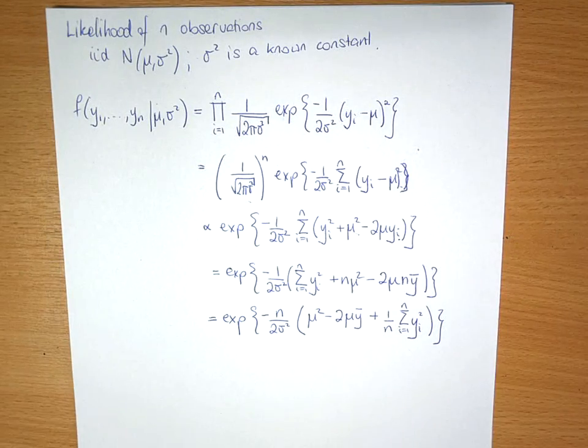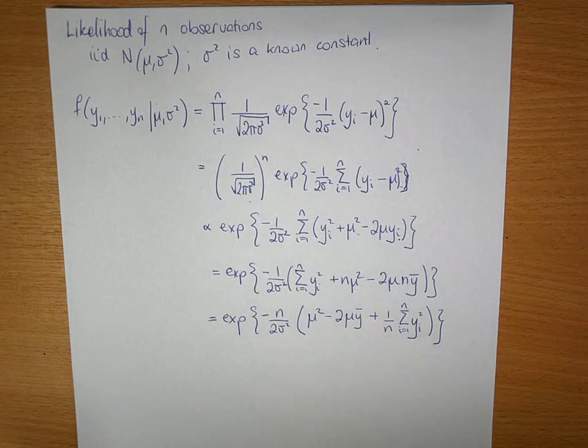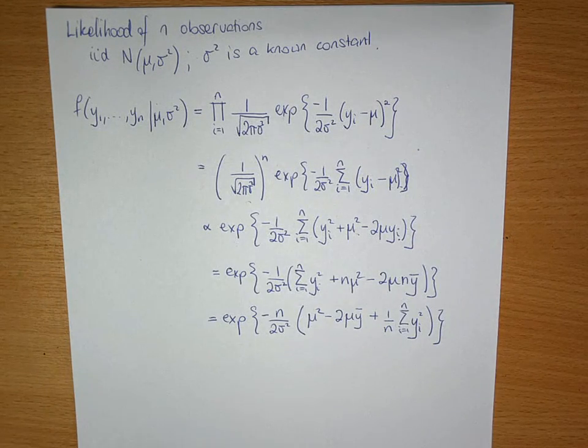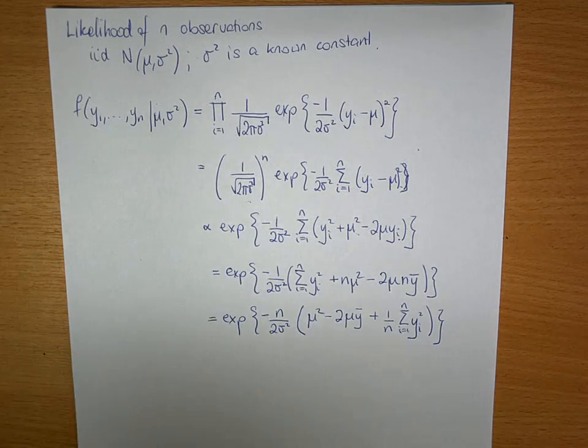And now we use a trick called completing the square. Essentially, we know that a product of Gaussian or normal distributions is also a Gaussian or normal distribution.